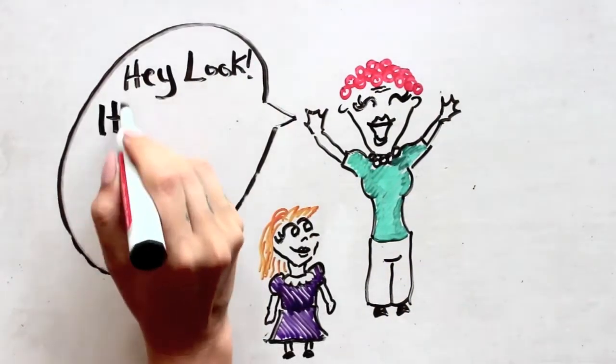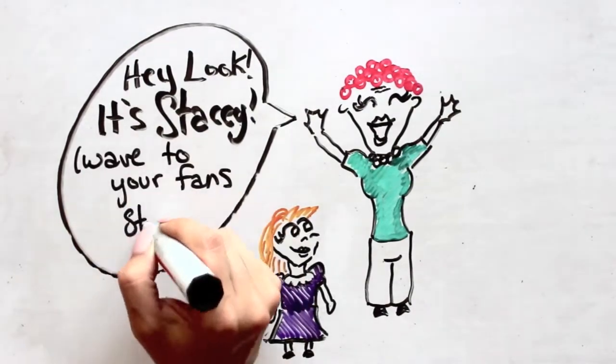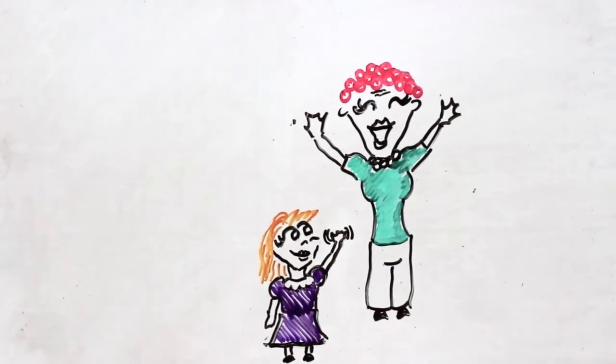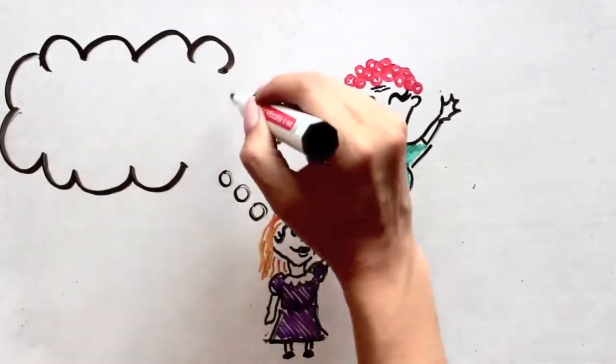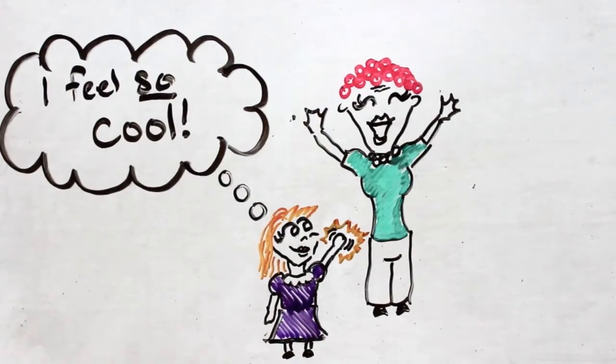When I was out with her, she would introduce me to all of her friends. She would tell them how special I was. And I felt so special. I really looked up to her. And because I spent so much time with her, I wanted to be just like her.